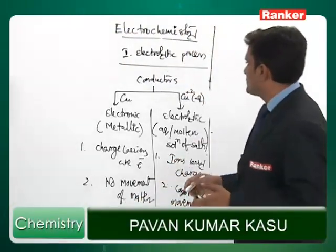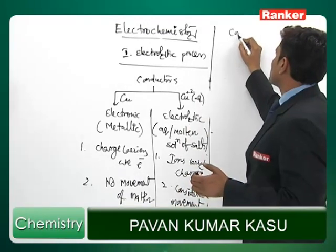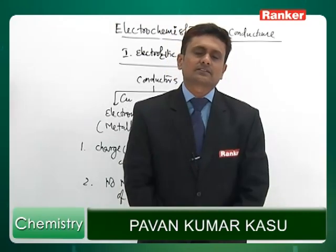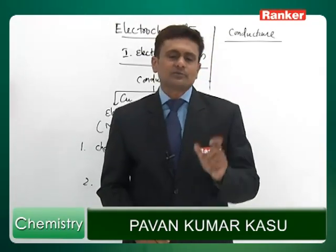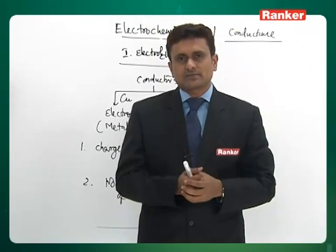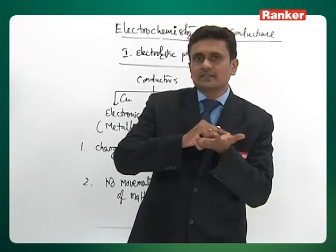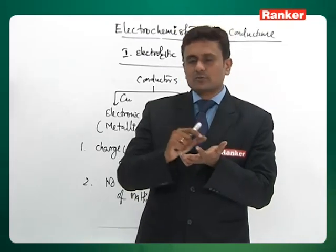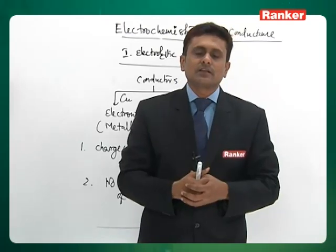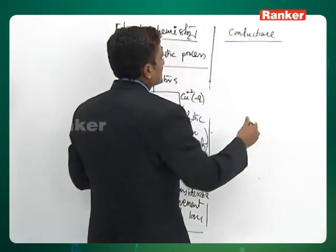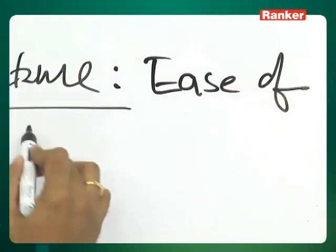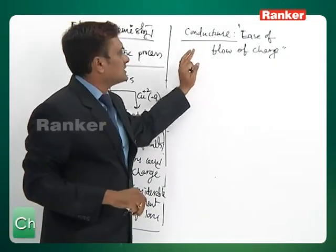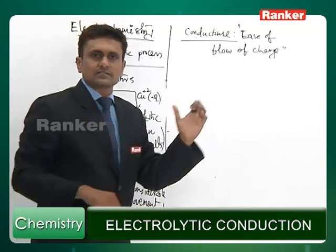The other definition we need to understand is conductance. Conductance is the ease with which charge flows through the conductor. For an electronic conductor, we look at how easily electrons move from one place to another; for electrolytic conductors, we look at how easily ions flow from one electrode to another. Conductance is simply the ease of flow of charge — if it is an electronic conductor, the charge is electrons; otherwise, it is ions.